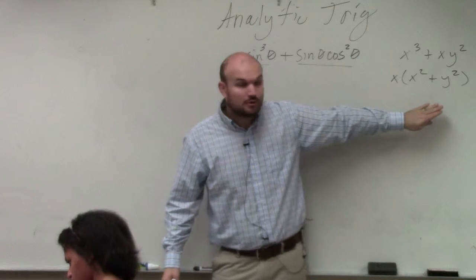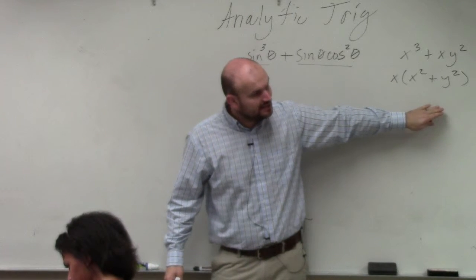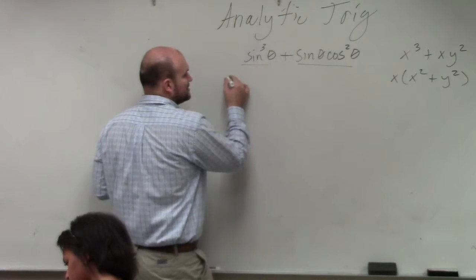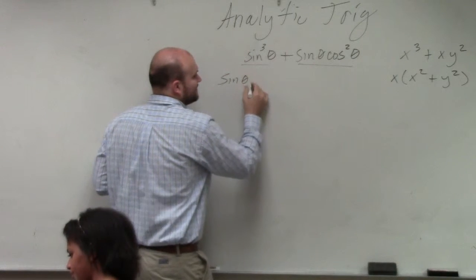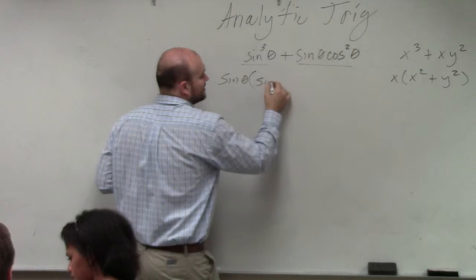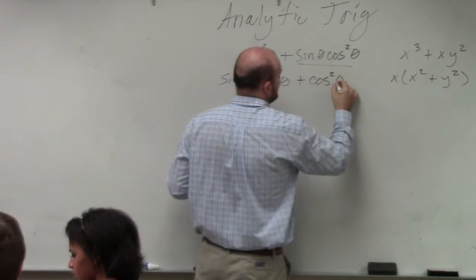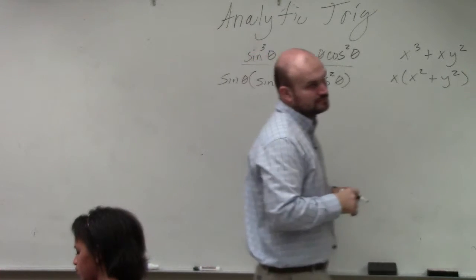So in algebra, that's what we did. In trig, we're doing the same operation. We're just doing it with functions, with trig functions. So I'm going to factor out a sine of theta. That's going to leave me with sine squared of theta plus cosine squared of theta.